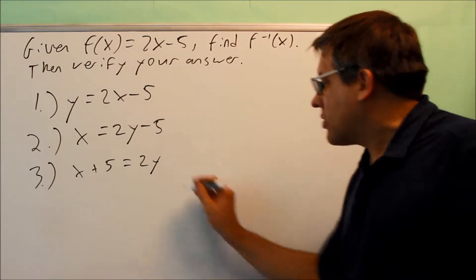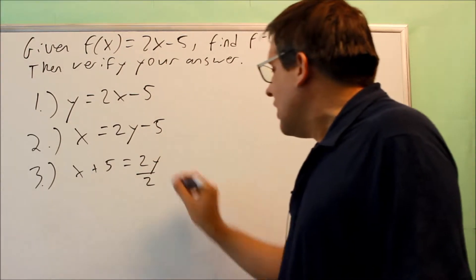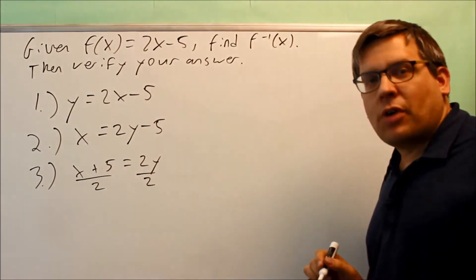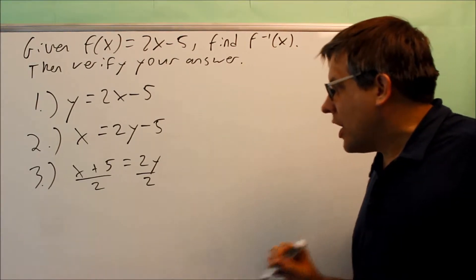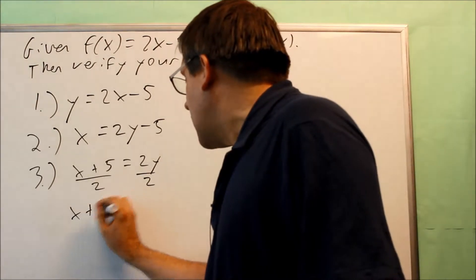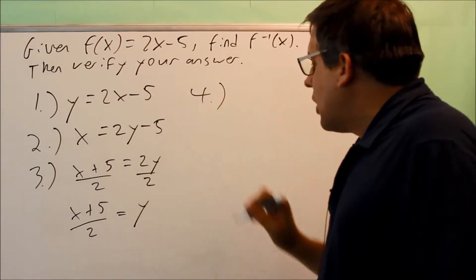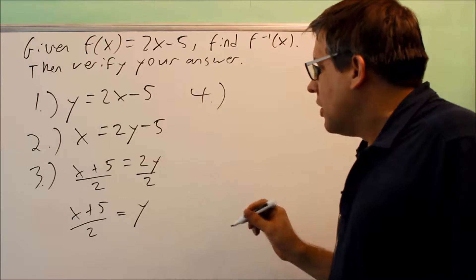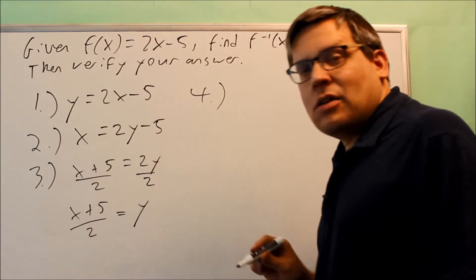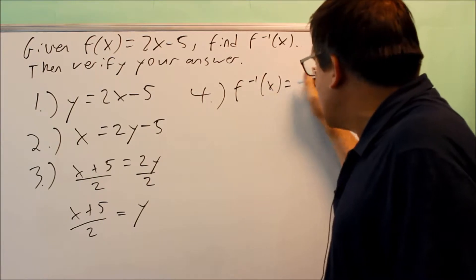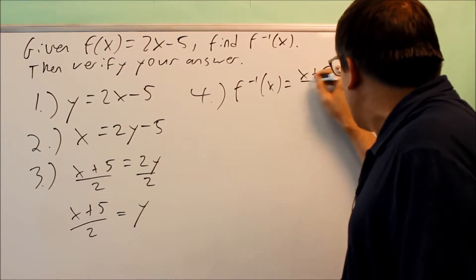and I have x plus 5 equals 2y. Now I want to get y by itself, which means I'm going to divide this part by 2, and I'm going to divide this side by 2. So when I get done dividing, I get x plus 5 over 2 equals y. Step number four of this process would be to change the y back into the inverse notation. So I have the inverse of x is going to equal x plus 5 over 2.